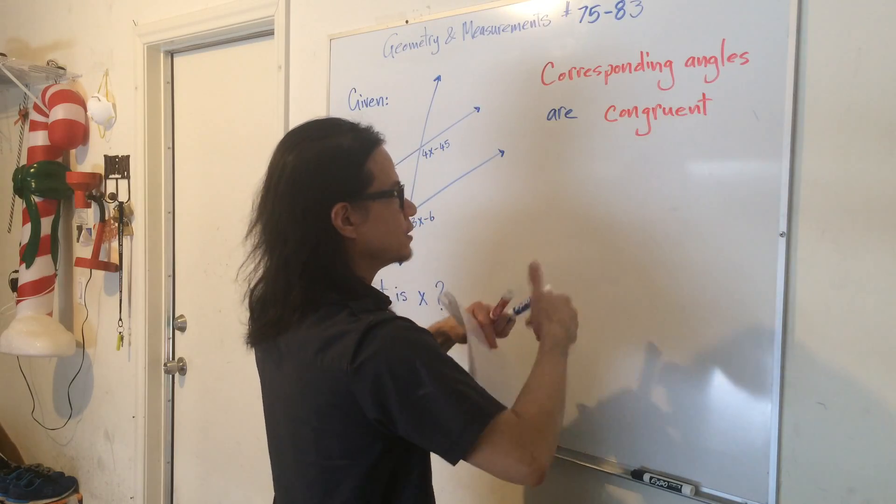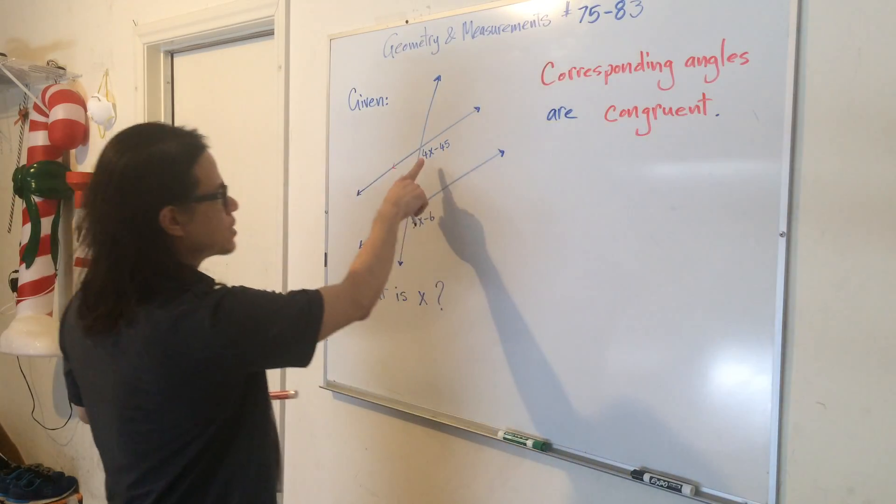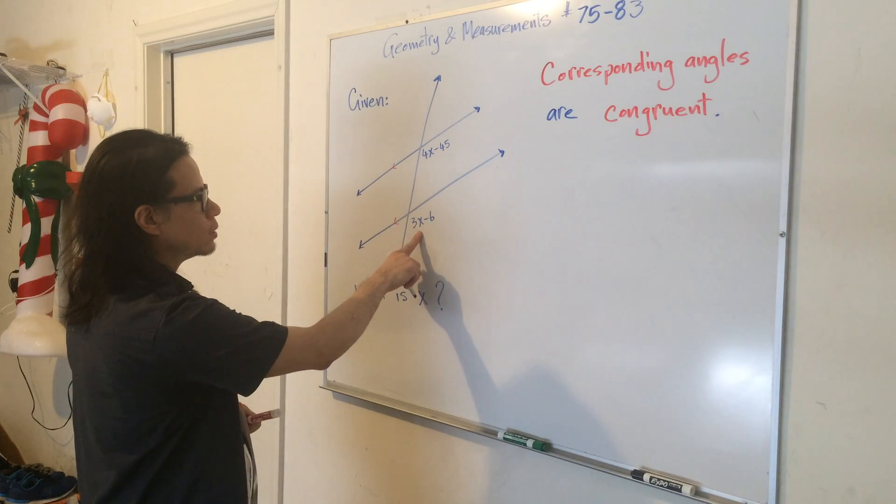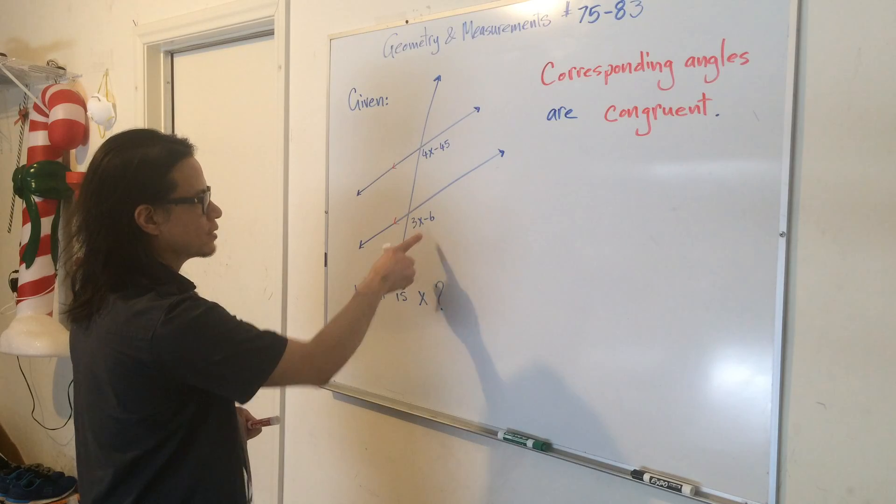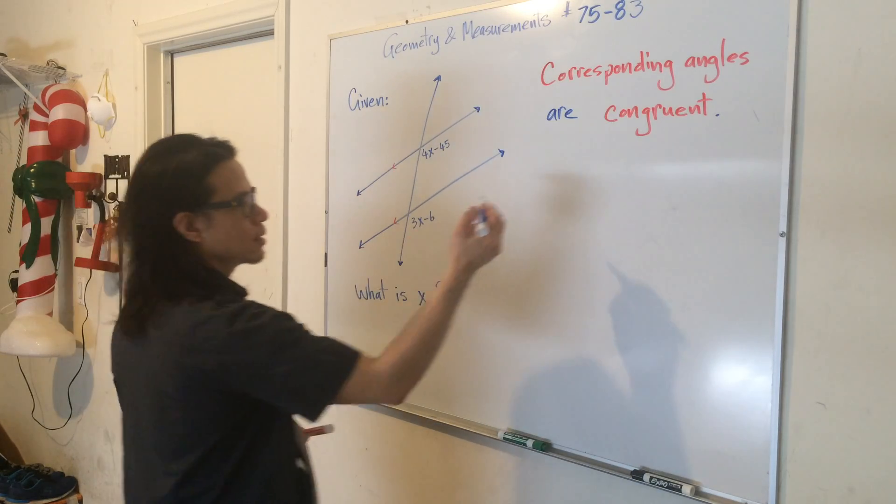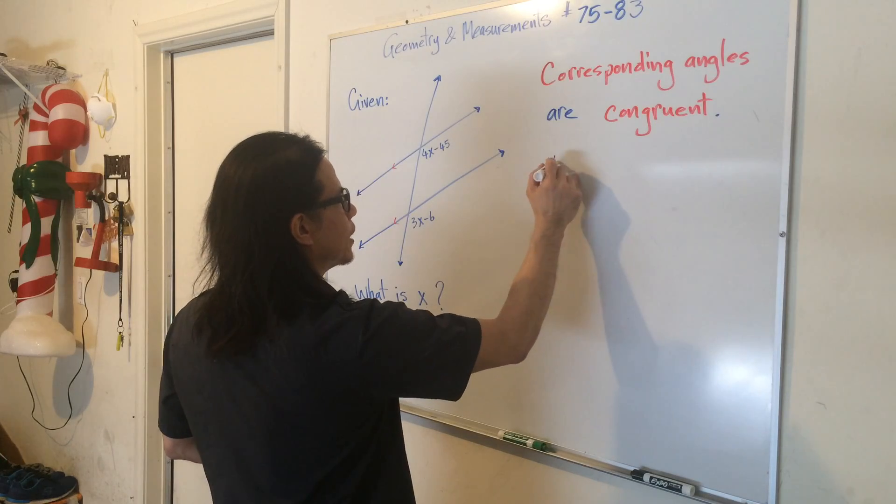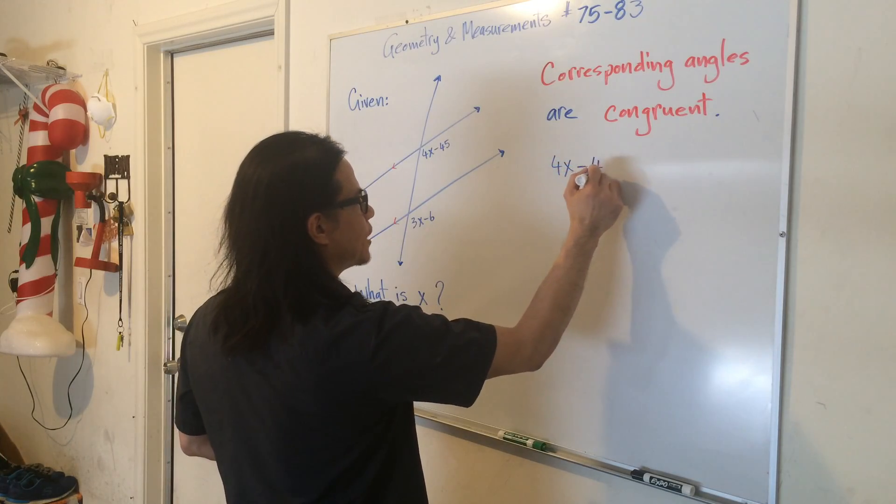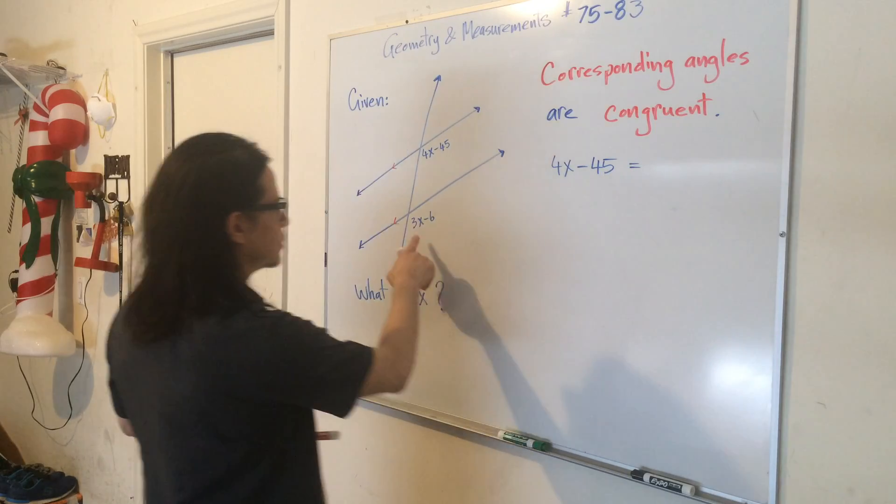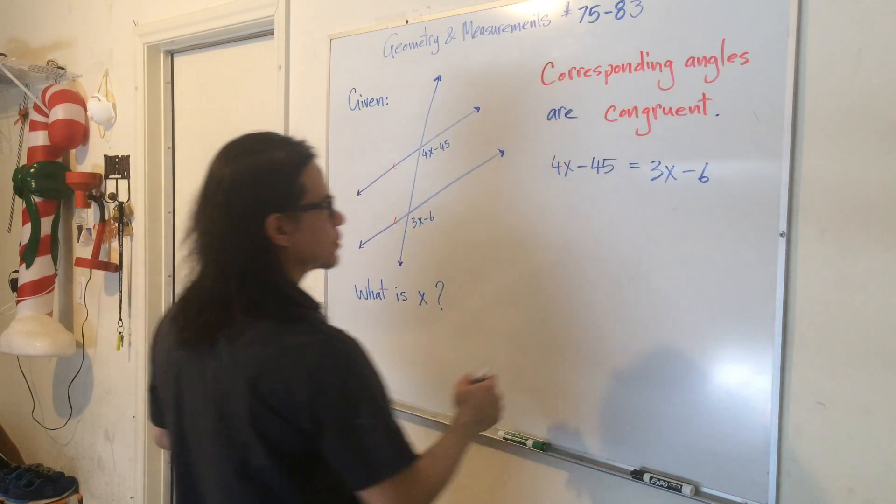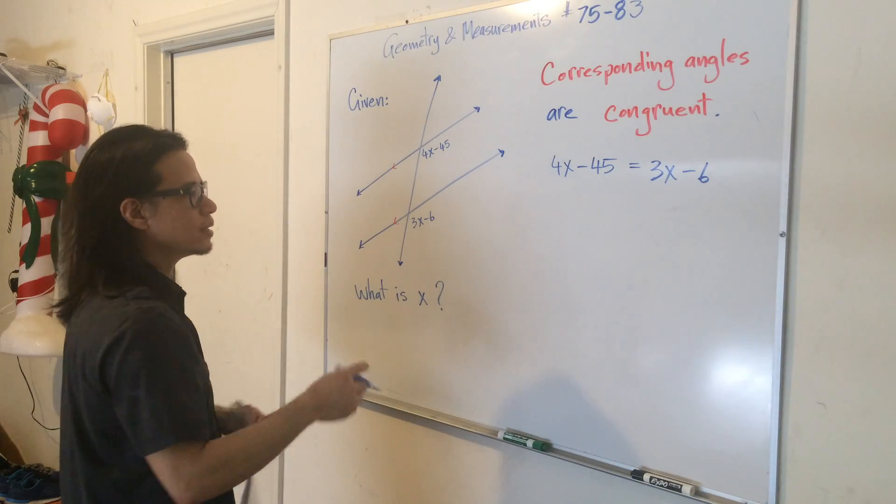That helps us a lot because we can say that 4x minus 45 is equal to 3x minus 6. So let's lay that down: 4x minus 45 equals 3x minus 6, because they are corresponding angles.